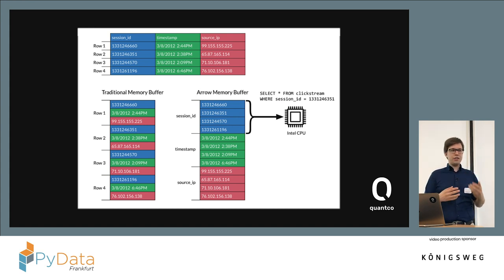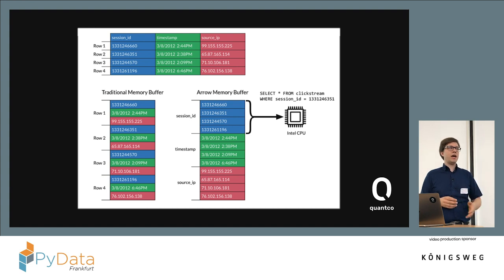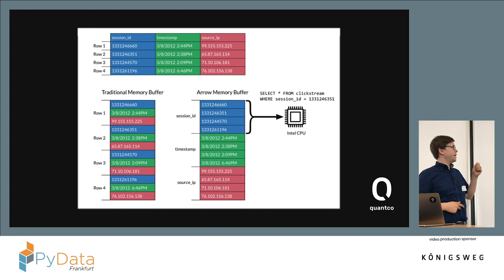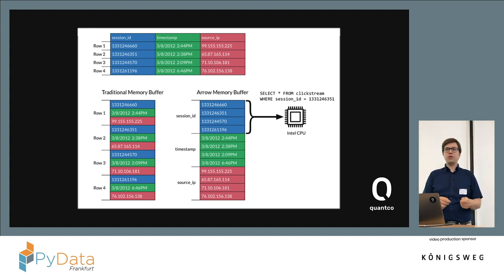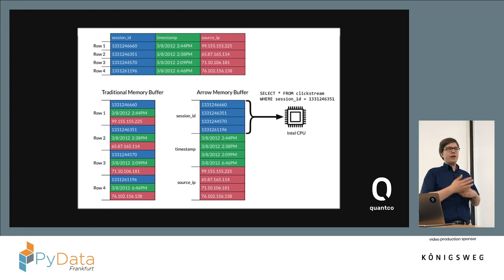In data science and analytics, you're normally more interested in working on one column at a time — give me the average price, give me the maximum price. All your tasks are based on values from one column, so interleaving column values with other columns' data until you reach the next value is not beneficial. CPUs optimize by fetching and working on chunks of memory, so if there are values in between from other columns, you're just wasting bandwidth. That's why analytics prefers columnar data.